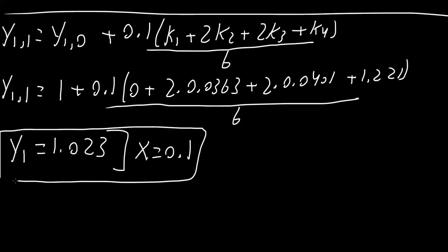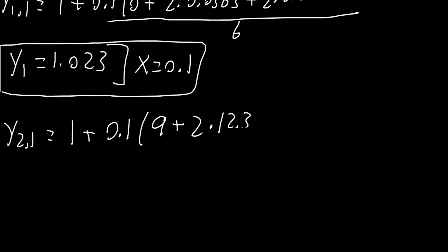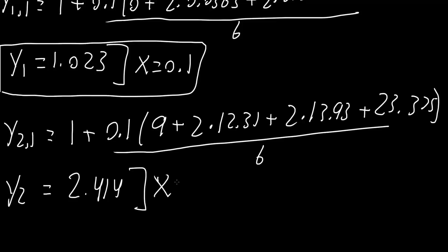We need to do the same for y2 and y3. y2,1 equals 1 plus 0.1 times (9 plus 2·12.31 plus 2·13.93 plus 23.375) divided by 6, giving 2.414. This is y2 when x equals 0.1.